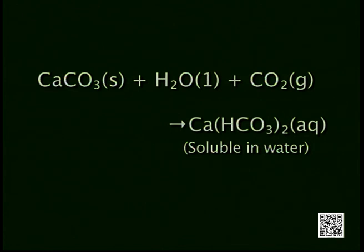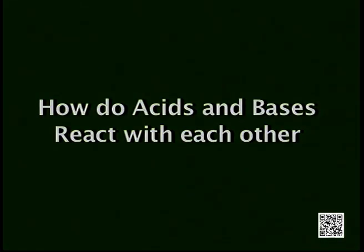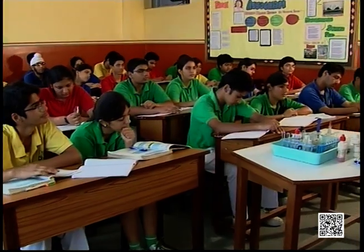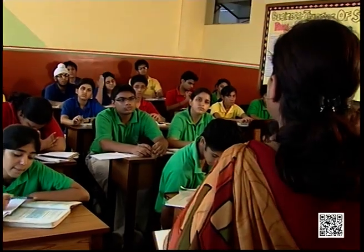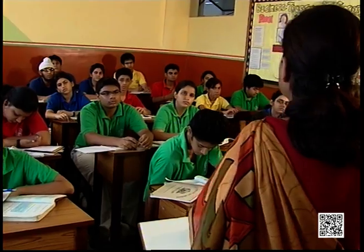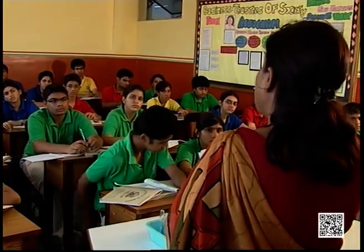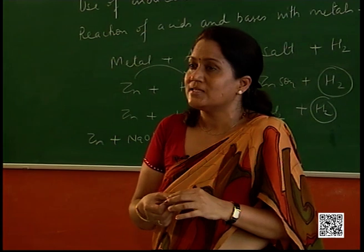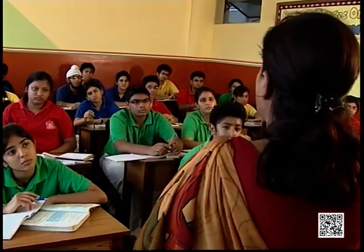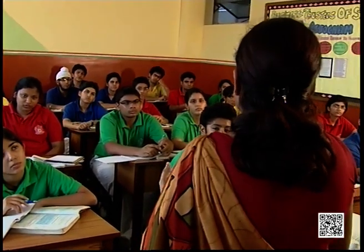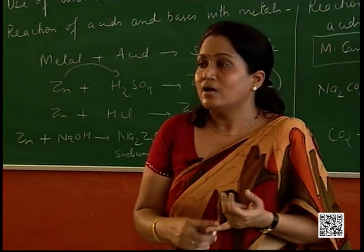We have discussed the reaction of acid with metals and metal carbonates with acid. Now, when an acid reacts with a base: an acid contains hydrogen ions and a base contains hydroxyl ions. When they react together, they get neutralized, and the end product is salt and water. If it is a strong acid and a strong base reacting, the salt formed is neutral. Water is also a neutral substance, provided it is distilled water.